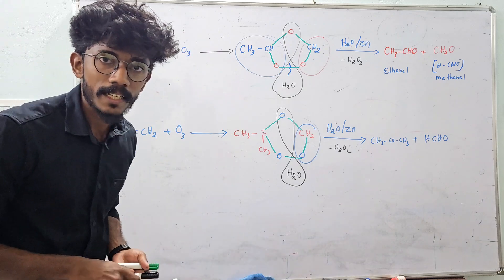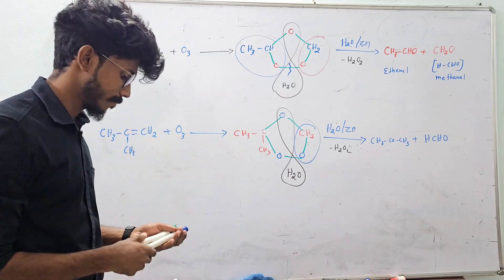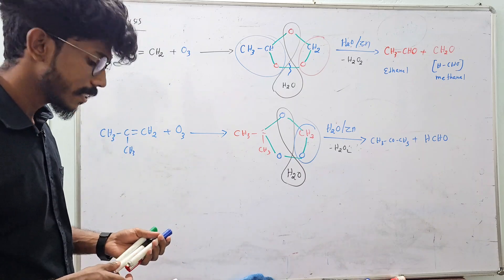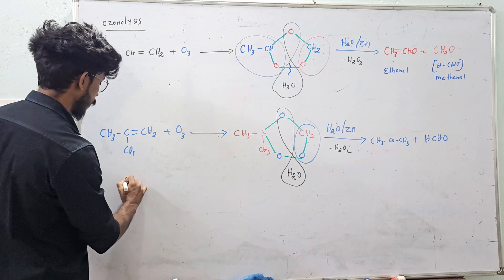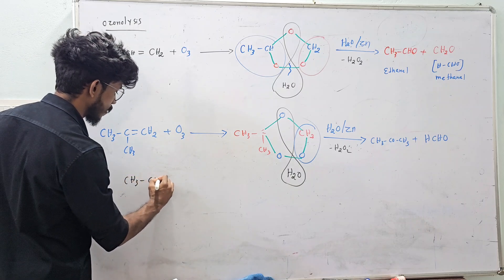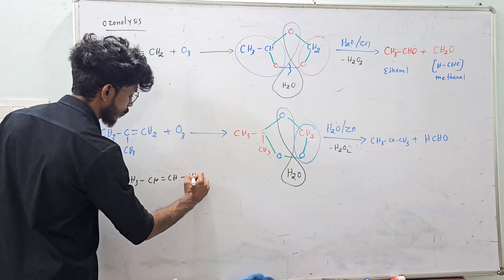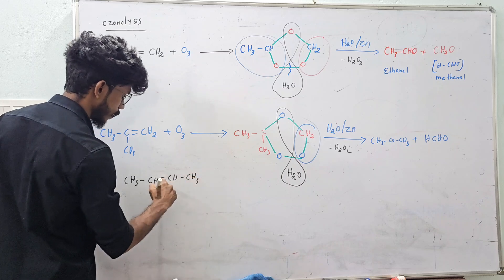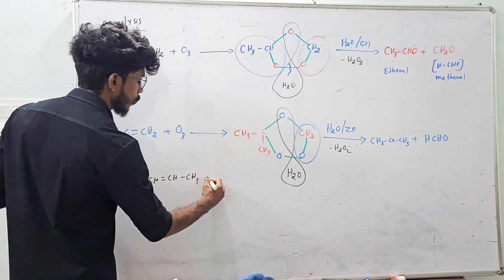Any doubt? Is it clear? I'm going to tell you. CH3CH double bond CH2 — one, two, three. Okay. This is ozonolysis.